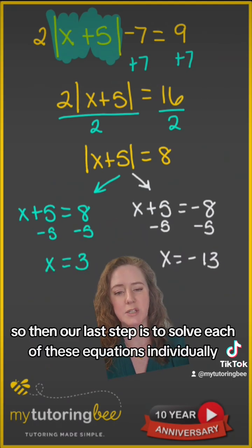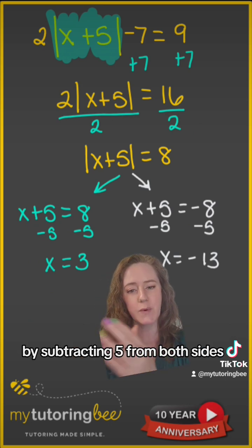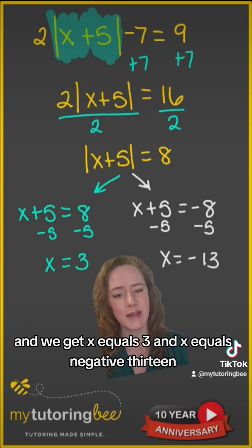So then our last step is to solve each of these equations individually by subtracting five from both sides. And we get x equals three and x equals negative 13. Let's go.